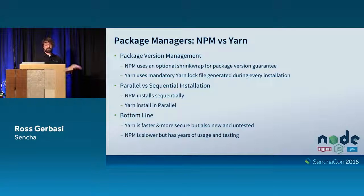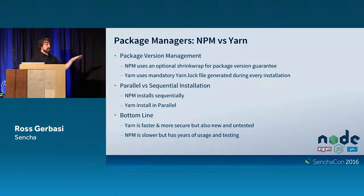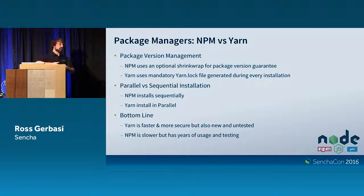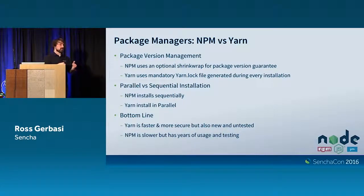As far as version management, on NPM you have an optional package called shrink wrap that locks down versions across your team. The key word there is 'optional.' Yarn took that out — every time you do an install, you get a yarn.lock file and everybody's on the same version, no way around it. For parallel versus sequential installations: Yarn installs things in parallel, NPM moves in sequence. Bottom line — Yarn is faster. It's also more secure across teams with versioning, but it's brand new, months new, and untested. There will be bugs. NPM has been around forever — it'll install your stuff, but it's slow.